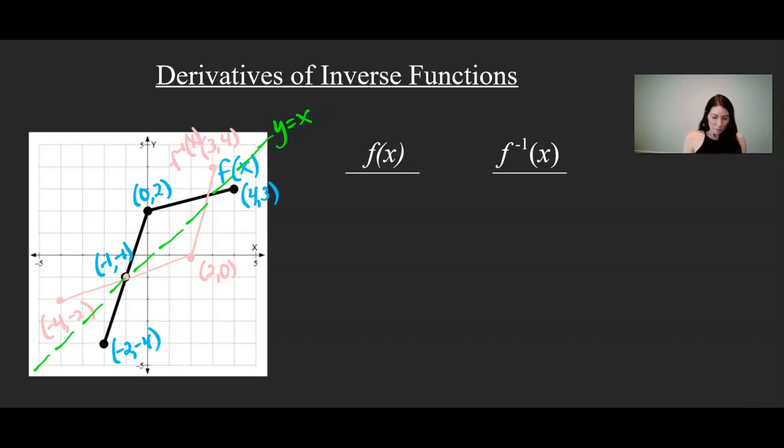Alright, so what I would like to point out is this. So once again, let's take, let's say I take a point on the original function. So let's say I take the point, um, I don't know, let's go with 2 and this point right here, which would be 2.5.